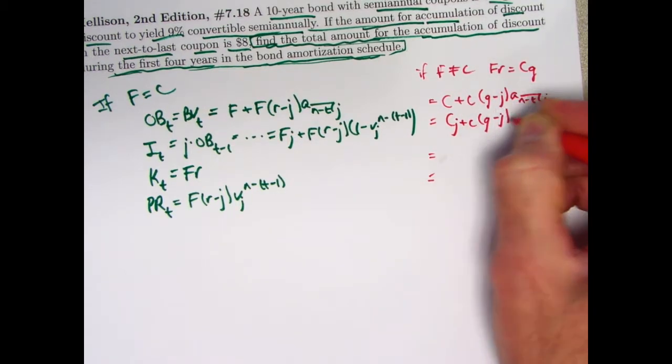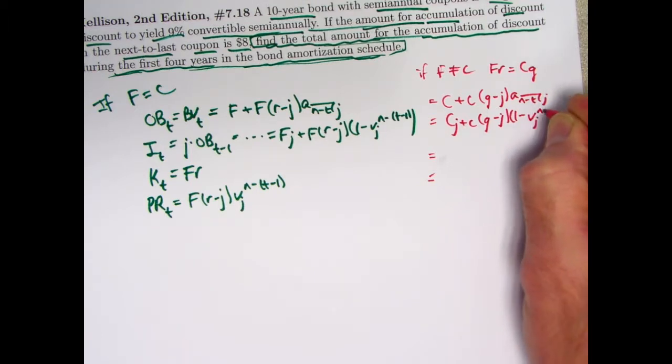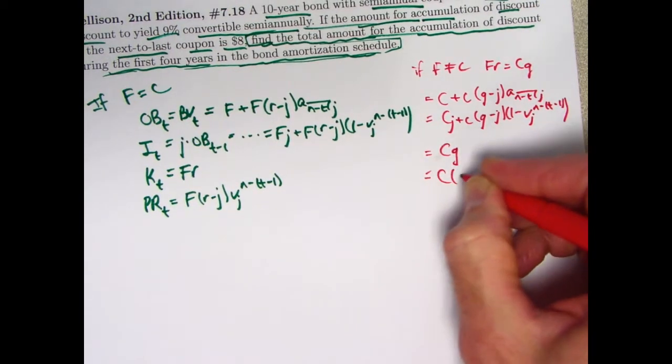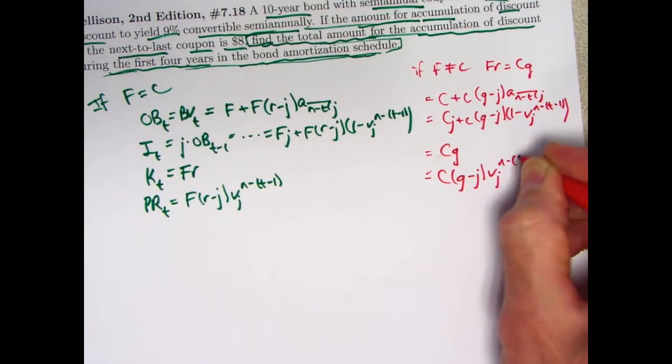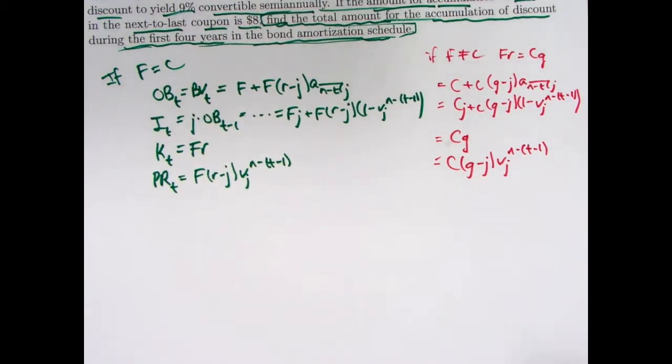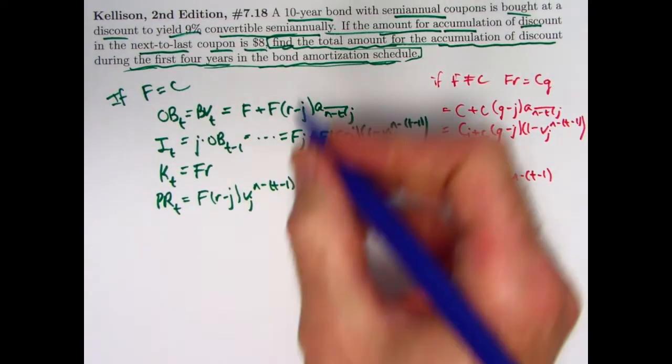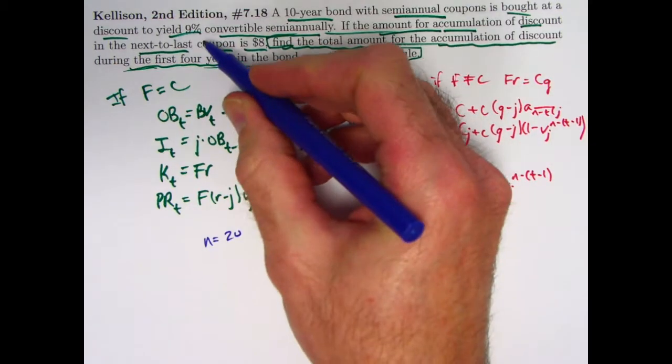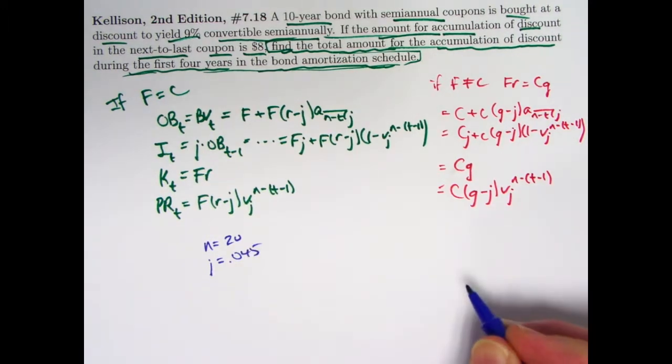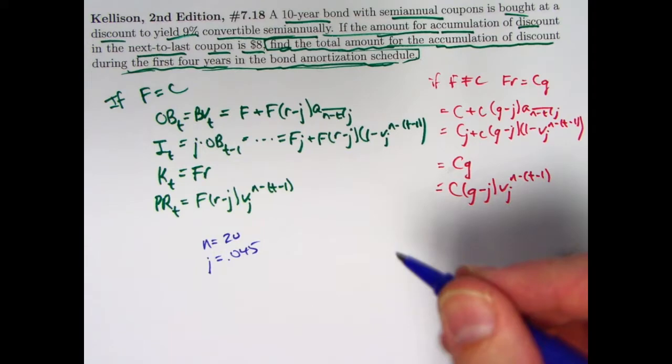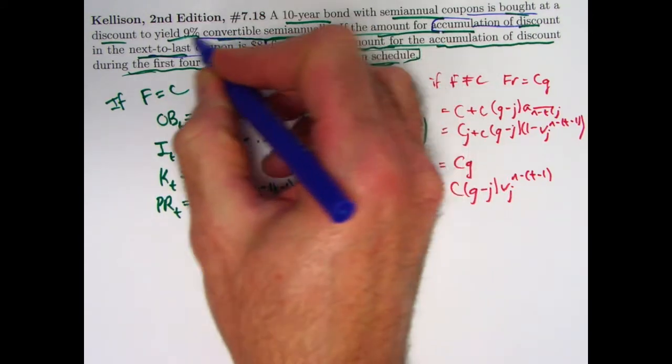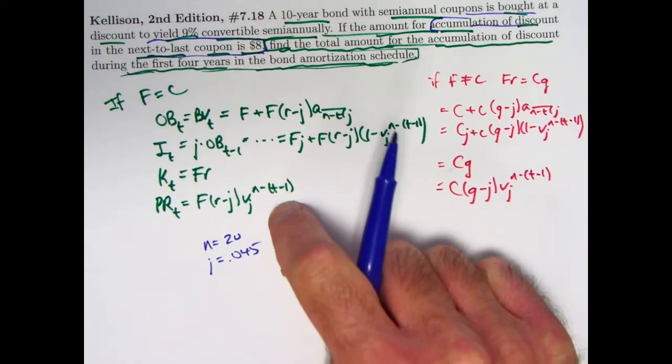So again, replace all the f's with c's, replace all the r's with g's, and you will get true equations in that case. And that's what I'm doing here. It's not clear that we're going to need all these equations, but I thought it would be good to review them anyway. And again, look at the last videos to see those. These are more general equations. That will always work. Okay? All right. So as far as solving the problem now, let's write down what we know. 10-year bond, semi-annual coupon, so N is 20. 9% yield convertible semi-annually, so the semi-annual yield rate is 4.5%.